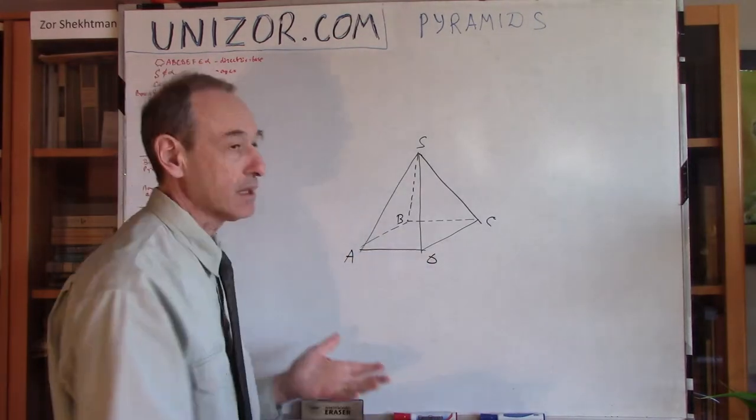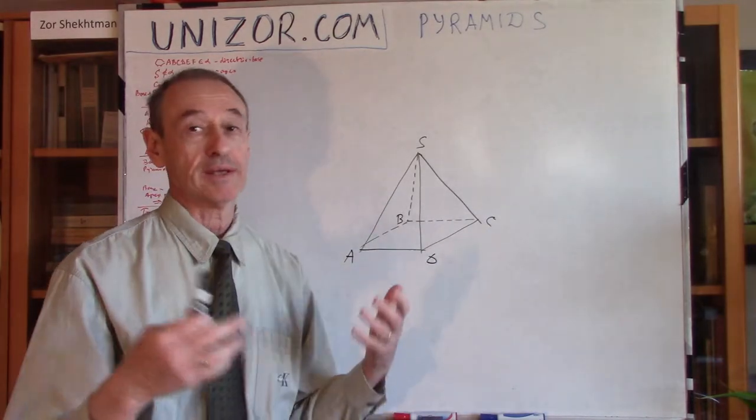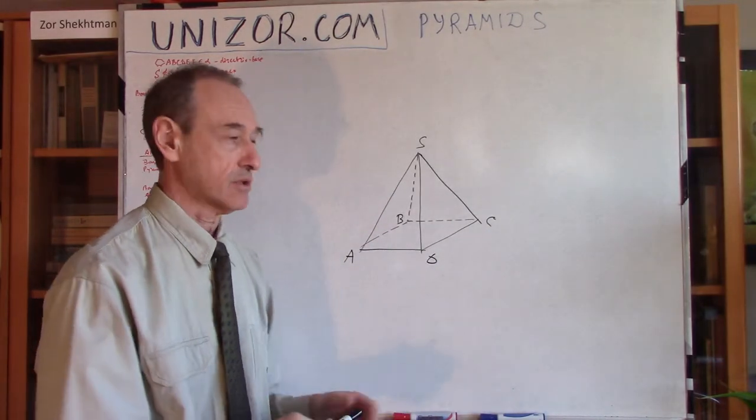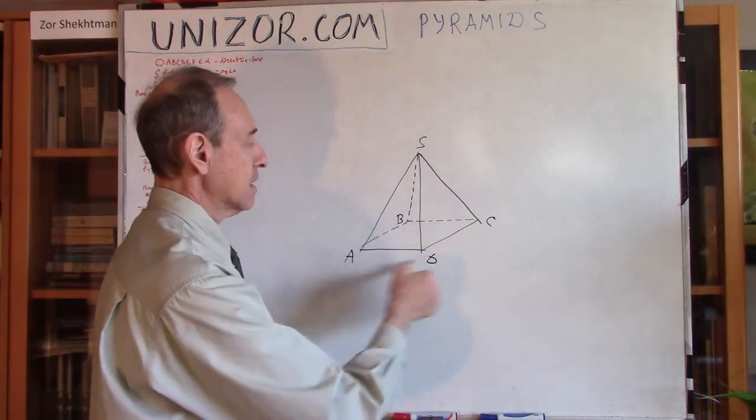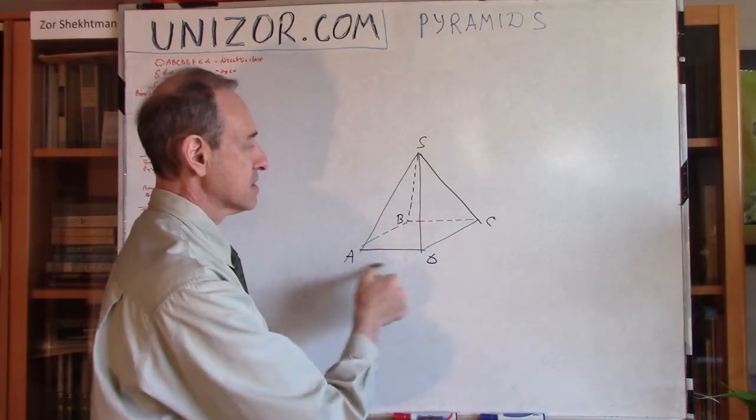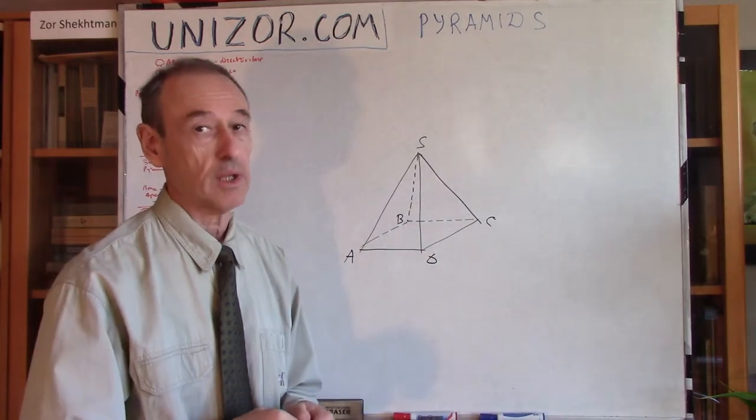Well, obviously, you can have a rectangle. And then it will be a rectangular pyramid. Or a hexagonal. And then it will be hexagonal pyramid, etc. So, you can differentiate different pyramids by the number of vertices of the base. Three, four, five, whatever the polygon is.